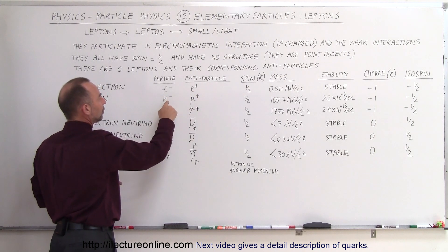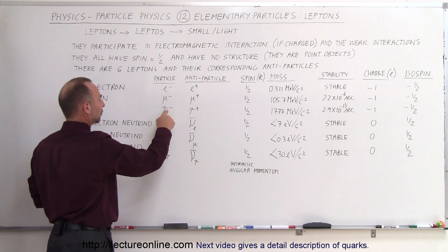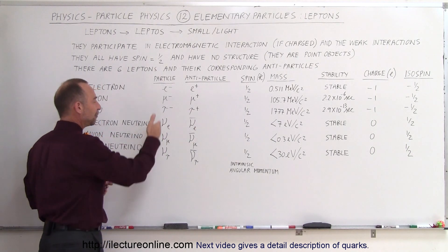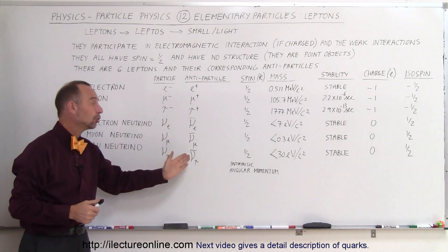So for the electron, there's a positron. For the muon, there's a positive muon. For the tau, there's a positive tau. And for each one of the three neutrinos, there's an anti-neutrino.